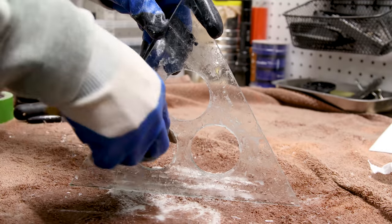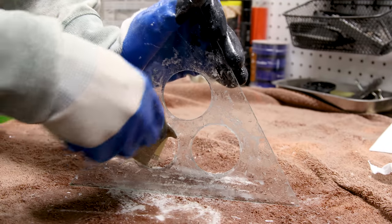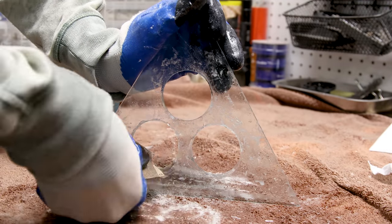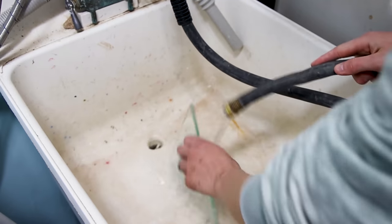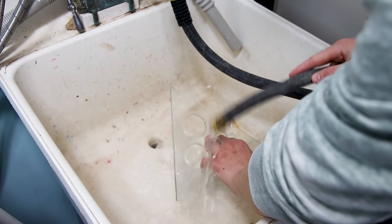I repeated this process on the other side piece. I went back and sanded the openings to remove any sharp edges. After that, I ran the pieces underwater to remove excess debris.